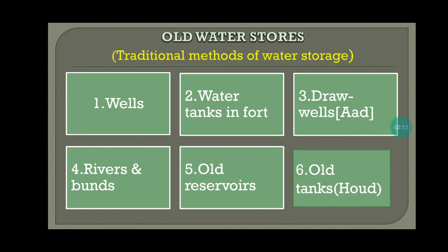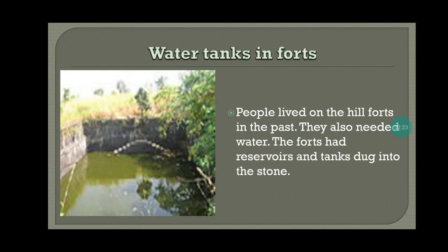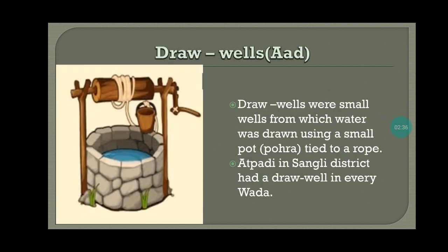Now let's see old water stores, that is traditional methods of water storage. Wells: some rainwater seeps into the ground, and wells are dug to obtain this water. Water tanks in forts: people lived on the hill forts in the past and also needed water, so the forts had reservoirs and tanks dug into the stone. Drawwells, that is aad: drawwells were small wells from which water was drawn using a small pot, that is pohara, tied to a rope. Atpadi in Sangli district had a drawwell in Ehurivara.